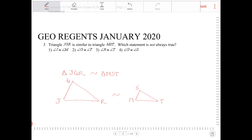The letters must correspond. So J corresponds with M, G corresponds with S, and R corresponds with T. So these all must correspond.